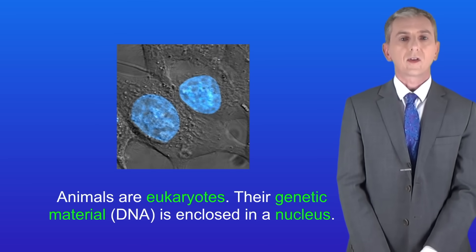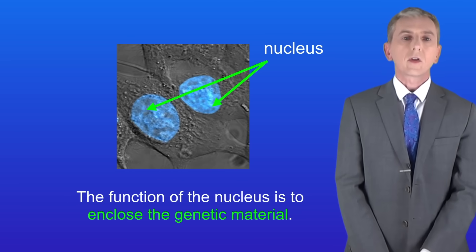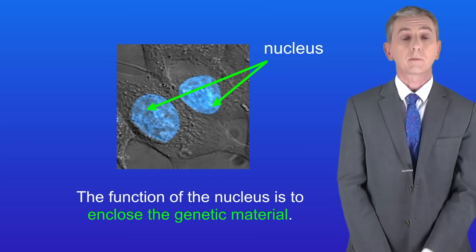Their genetic material, in other words their DNA, is enclosed in a nucleus. We can see the nucleus here. So the function of the nucleus is to enclose the genetic material. Now I should point out that the nuclei of these cells have been stained blue. Normally nuclei are not that colour.